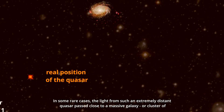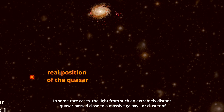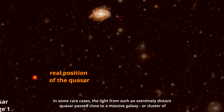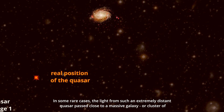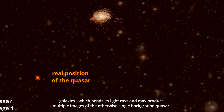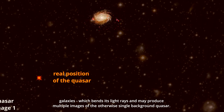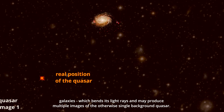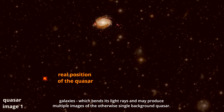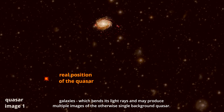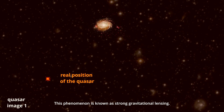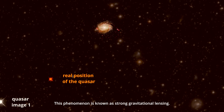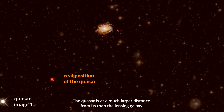the light from such an extremely distant quasar passed close to a massive galaxy or cluster of galaxies, which bends its light rays and may produce multiple images of the otherwise single-background quasar. This phenomenon is known as strong gravitational lensing.